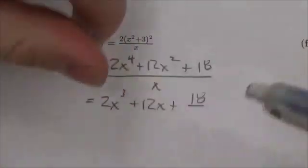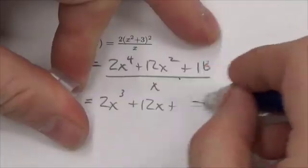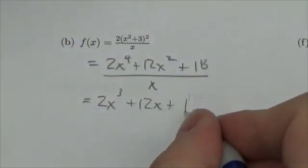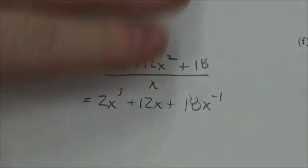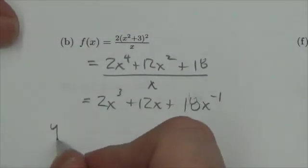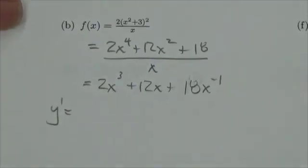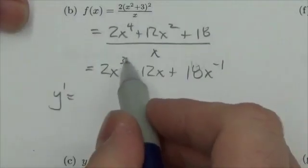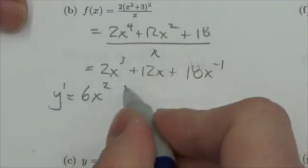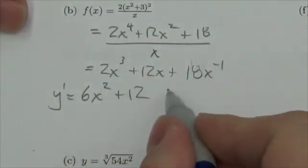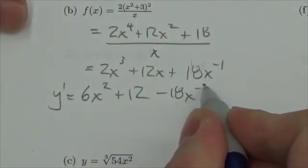And that'll get me 2x cubed plus 12x plus 18. Actually, you know what? I'm even going to do it like this because I know where I'm going to be going in a few minutes here. So I'm just going to make that 18 times x to the negative 1. Now this is set up really nicely just for a straightforward application of the power rule. Bring down the exponents. So this will be 6x squared plus 12, that's kind of nice, minus 18x to the negative 2.